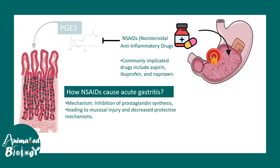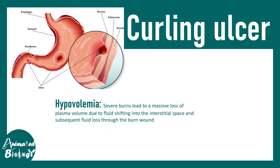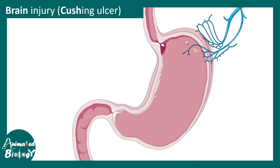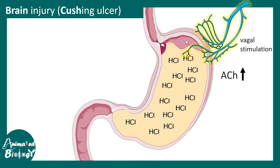NSAIDs cause acute gastritis through several mechanisms. Primarily, they inhibit prostaglandin synthesis, leading to mucosal injury and decreased proliferative and protective mechanisms of the gastric mucosa. There can also be Curling's ulcer from severe burns and massive plasma loss due to fluid shifting. Mucosal ischemia — insufficient blood supply to the stomach — can also cause ischemic injuries and ulceration. Cushing's ulcer involves CNS injury causing hyper-stimulation of the vagal nerve, which stimulates the stomach to secrete more and more HCl via acetylcholine, increasing gastric acidity and causing damage.